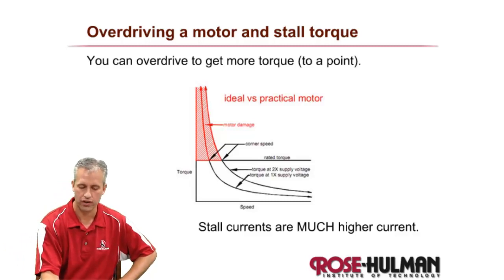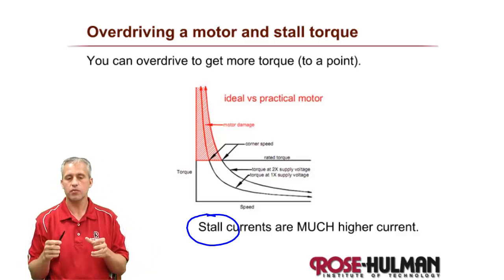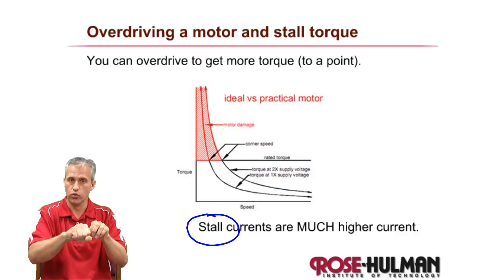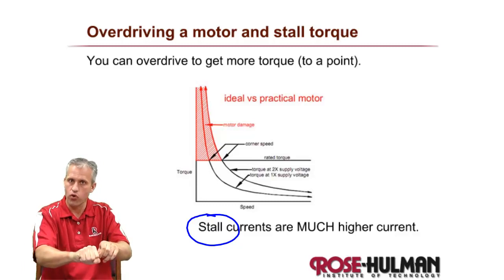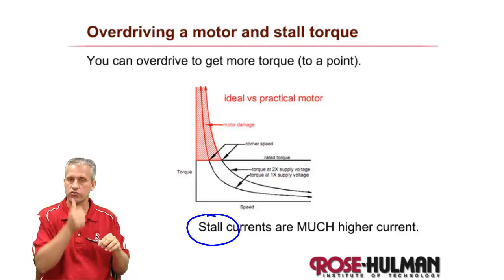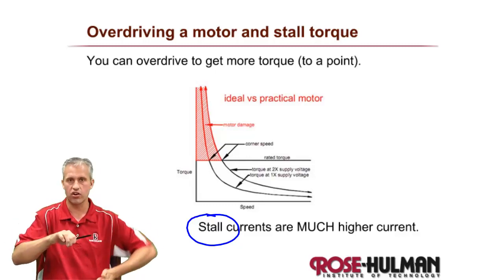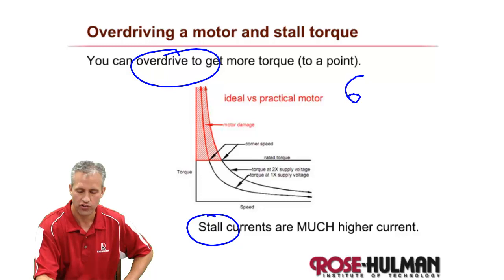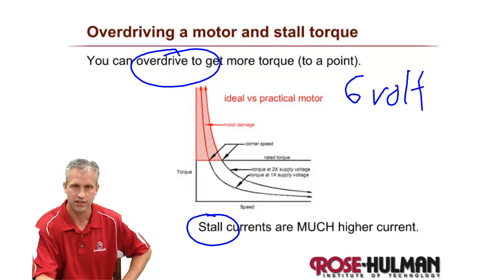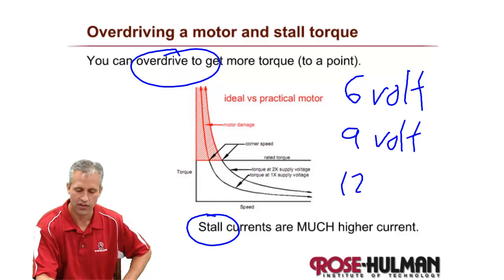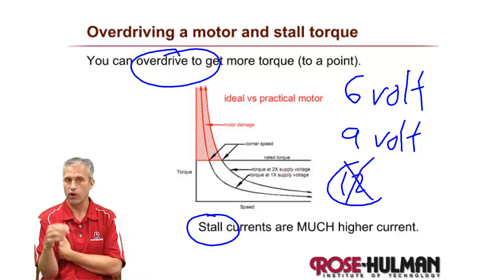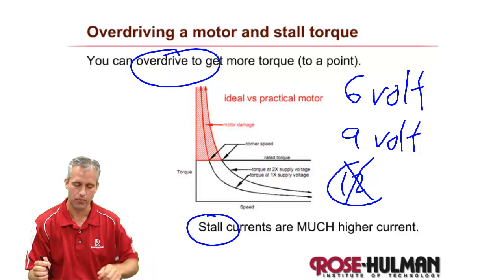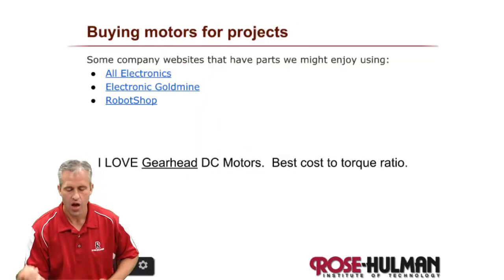A warning about motor damage: the most common time motors get damaged is when they stall. DC motors have a nice property where applying resistance to the shaft increases torque, but when stalled, the current spikes and can damage your transistor. You can also overdrive a motor — a 6V motor can handle 9V safely, but 12V is risky unless you're certain it will never stall.